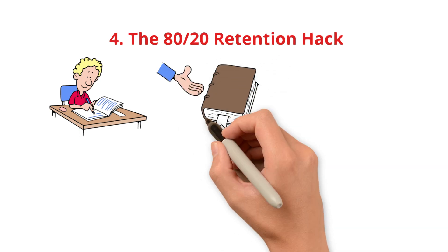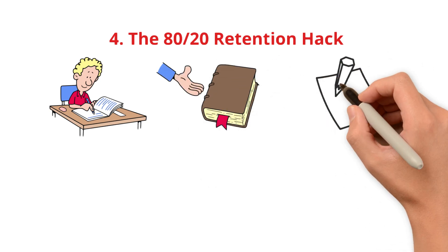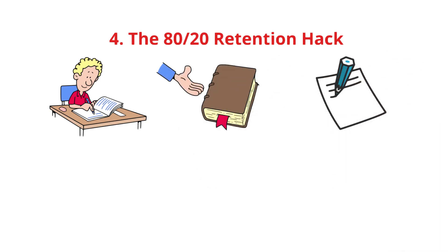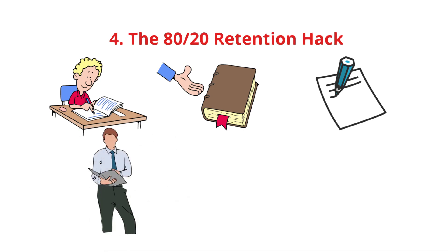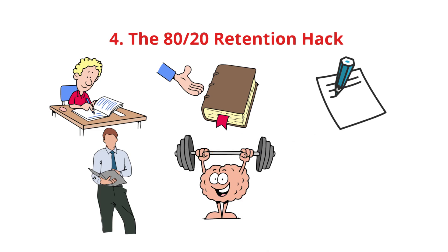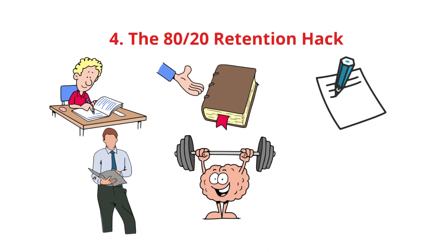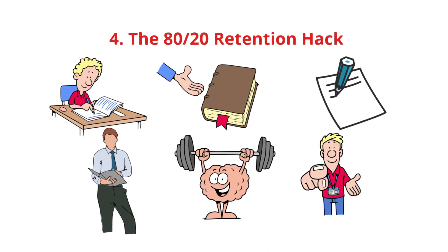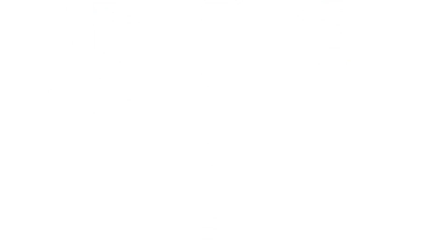Instead of just reading, close the book and test yourself. Use flashcards or write down what you remember from memory. Teach the concept out loud. If you can explain it, you understand it. Studies show that recalling information strengthens memory by 200% more than passive studying. Try it today. You'll be shocked at how much you retain. But what about staying focused for long periods? That's where tip 5 comes in.